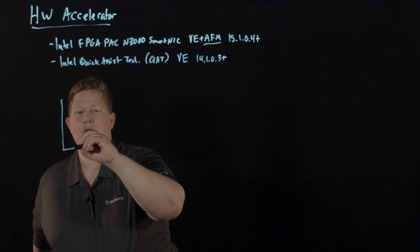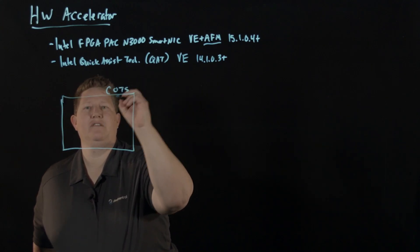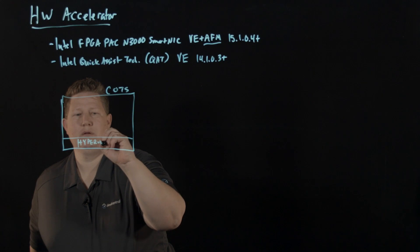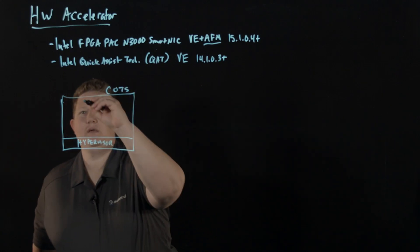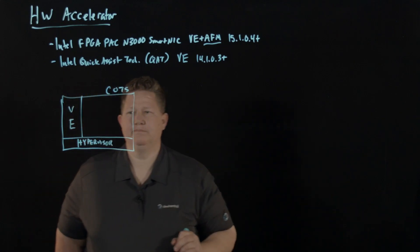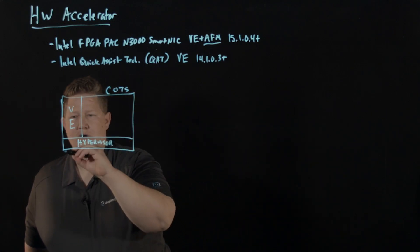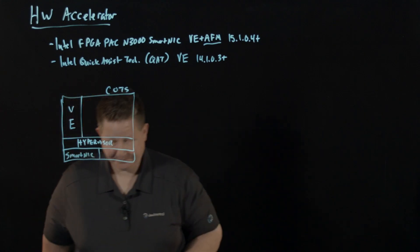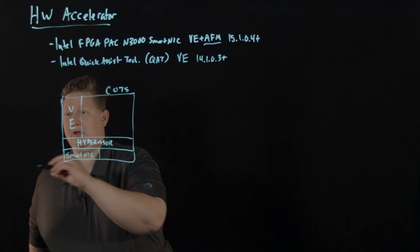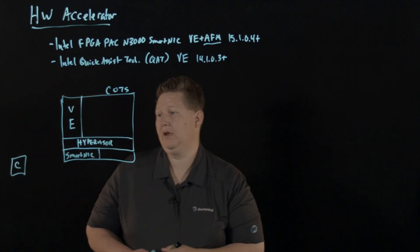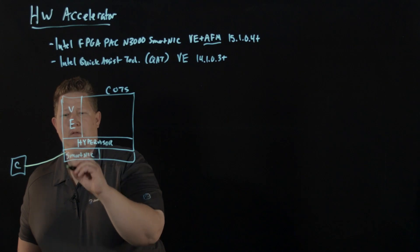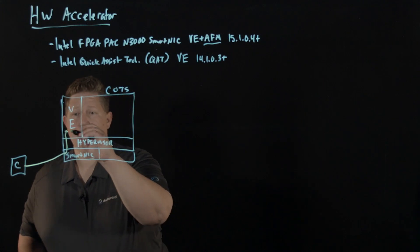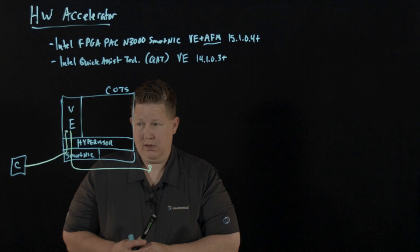So we have our COTS server here with a hypervisor. One of the things running on this is BigIP VE. And in this COTS server, we also have installed in here this SmartNIC. We have a client out here. The client is sending good traffic in through the SmartNIC, up through the hypervisor. VE is doing what VE does, doing its amazing application delivery. And then we'll go ahead and send that back to an application server.